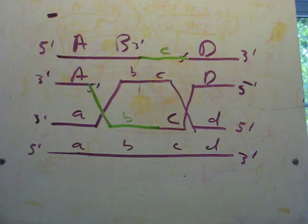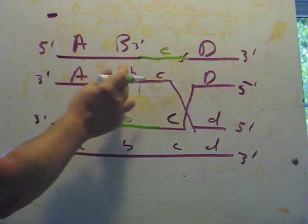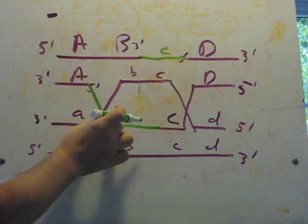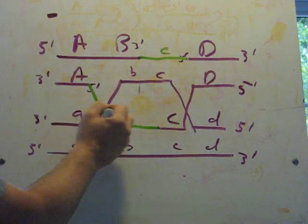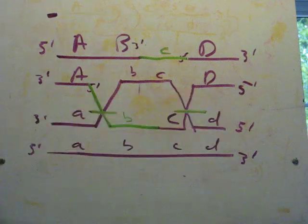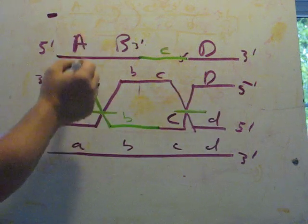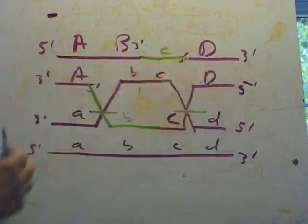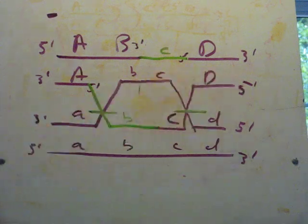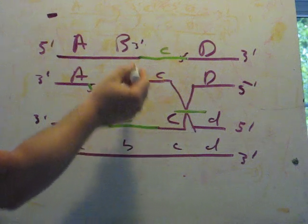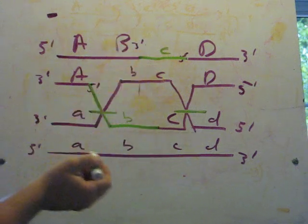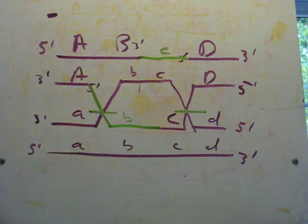Now how do we resolve this double Holliday junction structure? There are several possibilities. One is we cut and ligate the ends on the same sides — cuts here and here, and here and here — which conceptually means cutting and ligating on each side in the same orientation. When that happens, big A stays with big D and they don't exchange, leading to non-crossing over. But importantly, we still have patches of gene conversion here and here. If the heteroduplex gets resolved — say big B gets turned into little B, or big C gets converted into little C — that is another example of gene conversion.